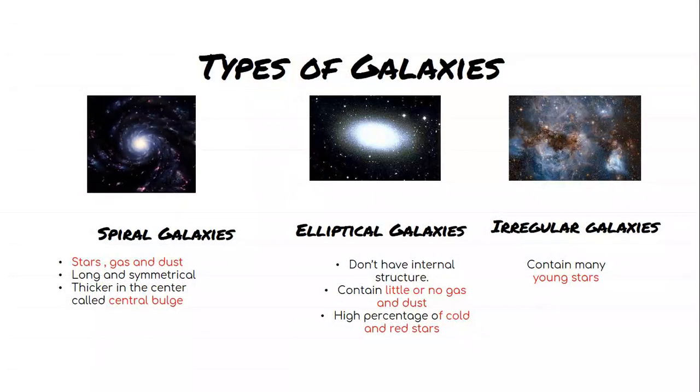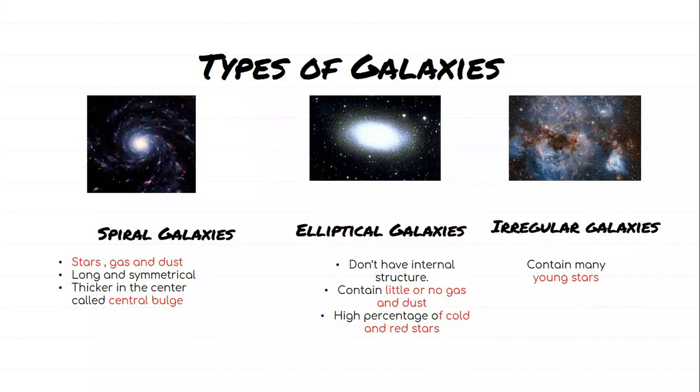Elliptical galaxies do not have internal structure. They have little or no gas and dust, and they have a high percentage of cold and red stars.